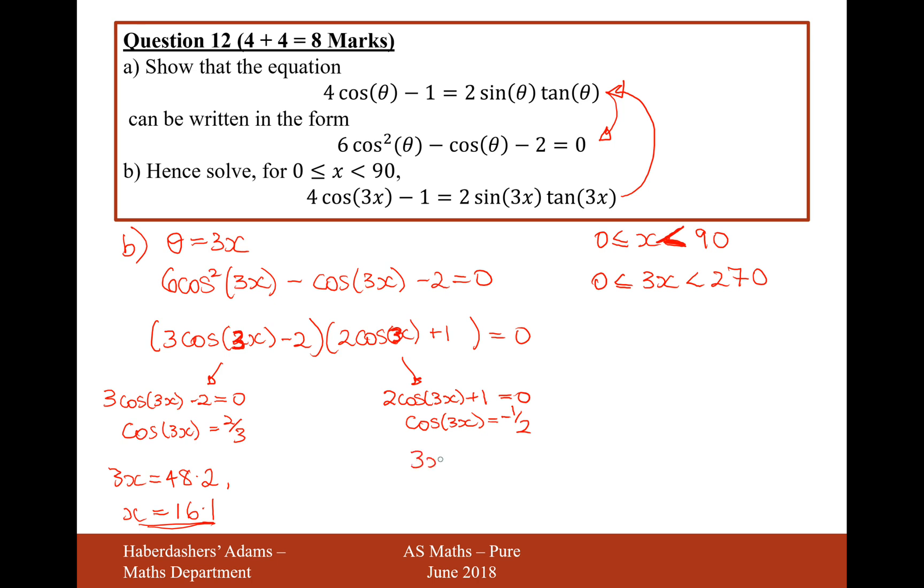And 3x is going to equal cos inverse of a half, so cos inverse minus 0.5. That will give us 120. And 360 minus that, that will give us 240.